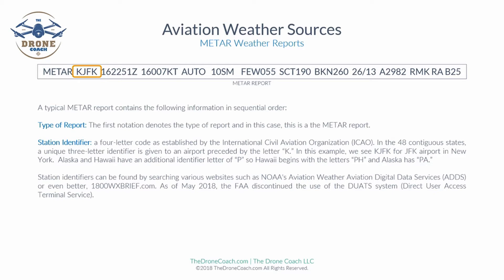The station identifier is a four-letter code established by the International Civil Aviation Organization, ICAO. In the 48 contiguous United States, a unique three-letter identifier is given to an airport preceded by the letter K. In this example we see KJFK for JFK Airport in New York. Alaska and Hawaii have an additional identifier letter — Hawaii begins with PH and Alaska with PA.